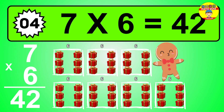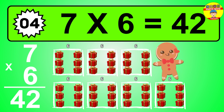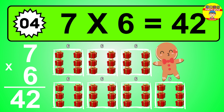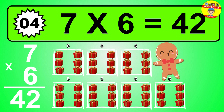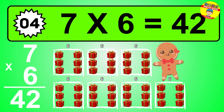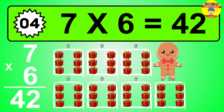The answer is seven times six is forty-two. To calculate, we have seven groups with six balls each one. So how many balls do we have? Forty-two balls.